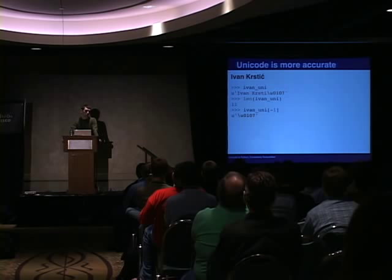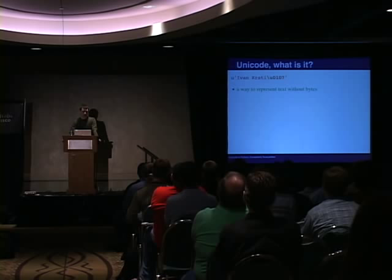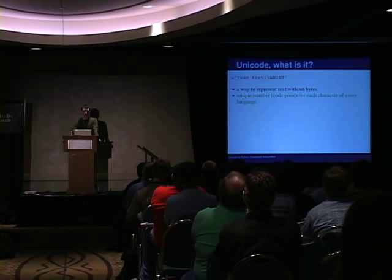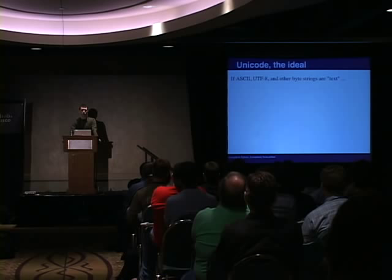So what is that object we just got? It's a way to represent text without bytes. Unicode is a specification that assigns a unique number — called code points — to each character of every language. It's not really every language in existence, but it's pretty much all major written languages, and that's quite a lot of characters. It supports over a million code points. So Unicode is the ideal. If ASCII, UTF-8, and these other byte encodings are text, then Unicode is text-ness — it is an abstract form of text. It's just a concept.